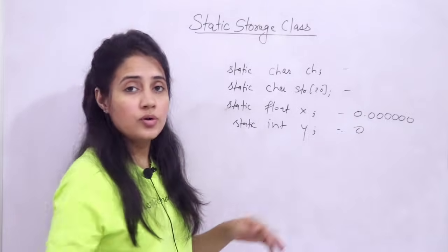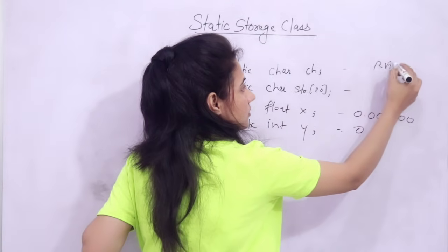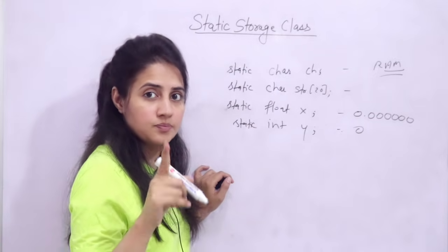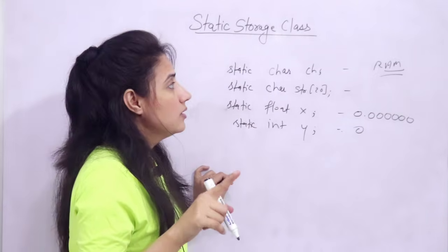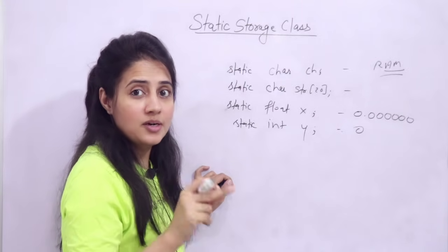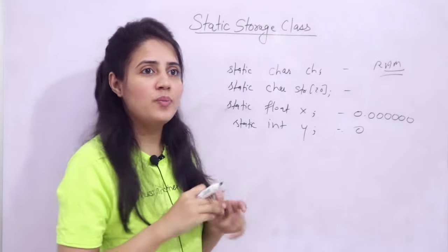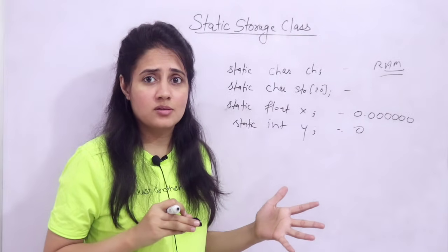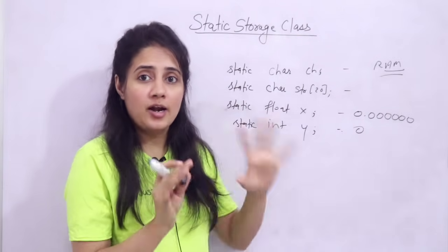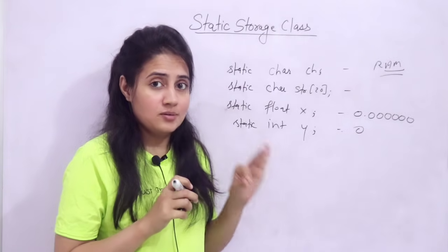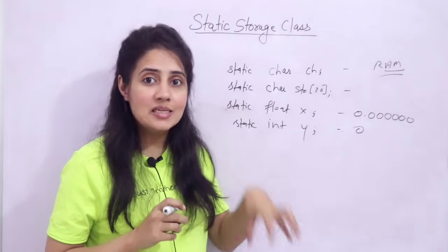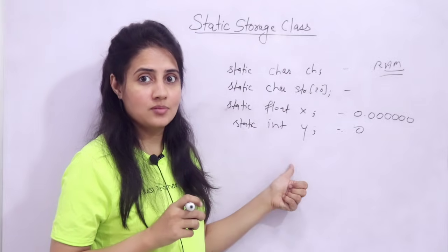The location where static variables are stored is in RAM — main memory — not in a CPU register. The third and fourth things are scope and lifetime, which are very important. You might think scope and lifetime are the same — scope is within the block, lifetime is also till the end of that block. But they are actually different, and you will understand this in this video.